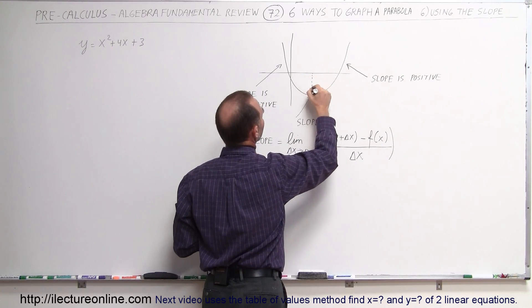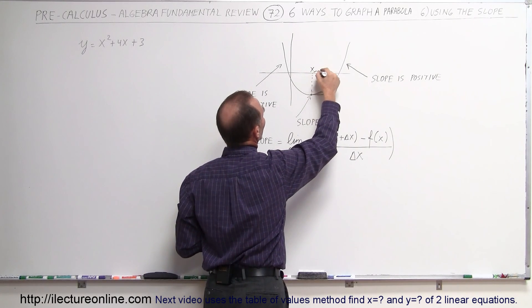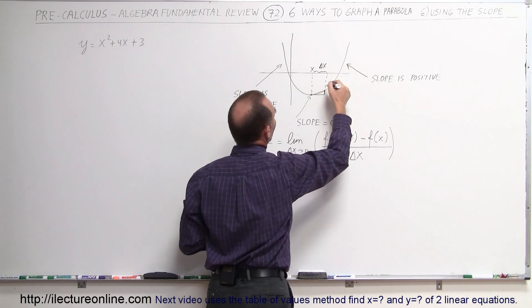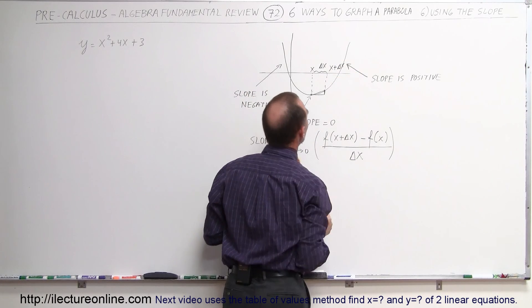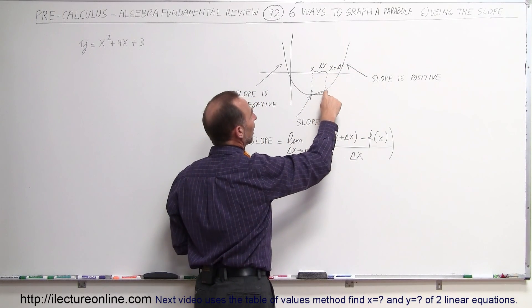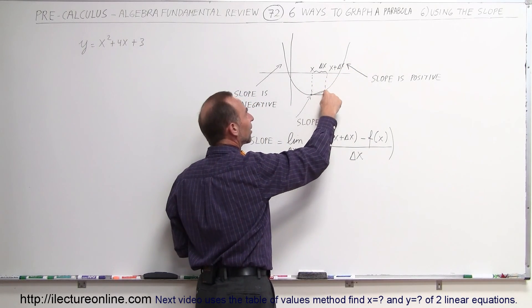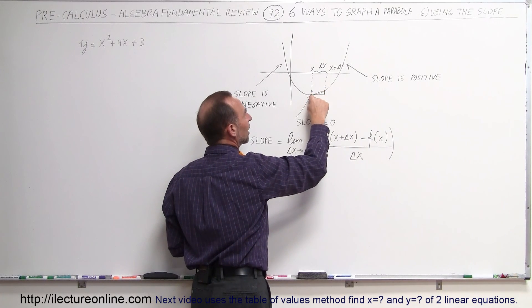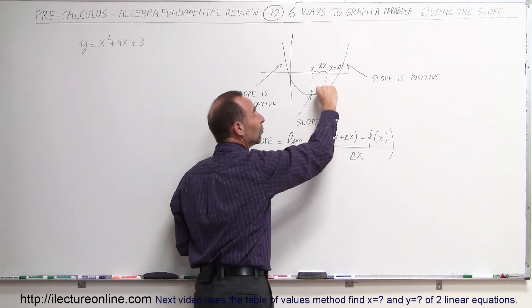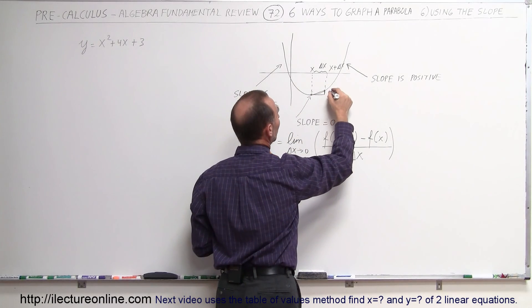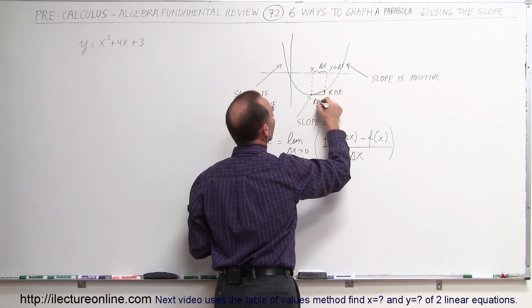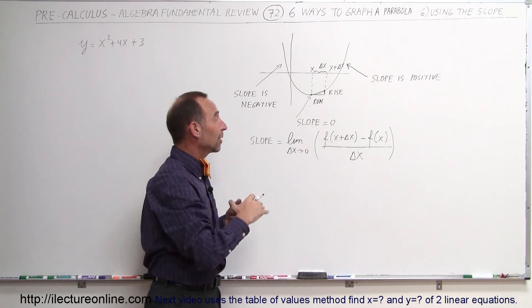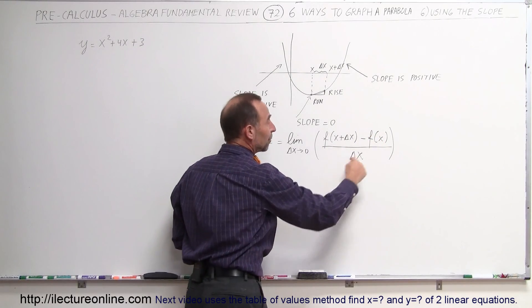If this here is x and this distance is a small change in x, then this point on the graph is x plus delta x. If we evaluate the function at x plus delta x, we get one value for y; if we evaluate the function at x, we get another value, and the difference between them is what we call the rise. So this is the rise and this is the run, and the slope is the rise divided by the run.